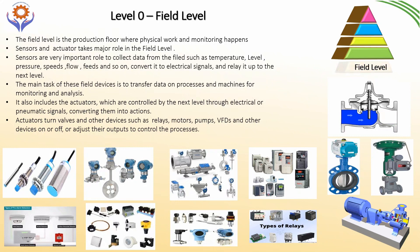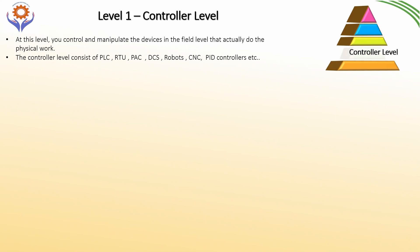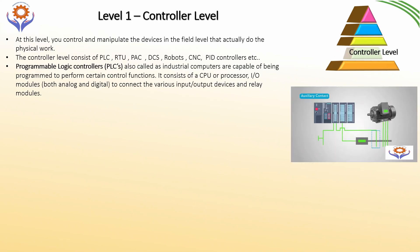The next level is the controller level, which collects data from the field level and, based on the sequence of operation, controls the I/O signals. PLCs and DCS are mostly used for industrial and process applications. The controller level consists of PLCs, RTUs, PACs, DCS, robots, CNCs, PID controllers, etc.